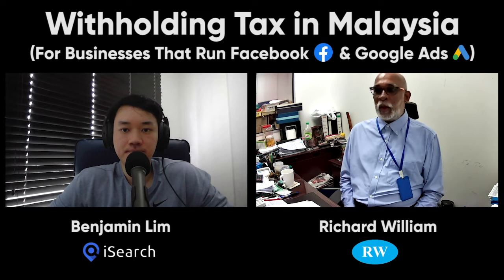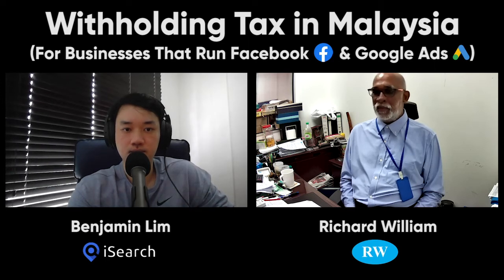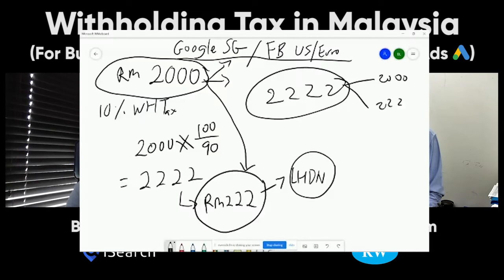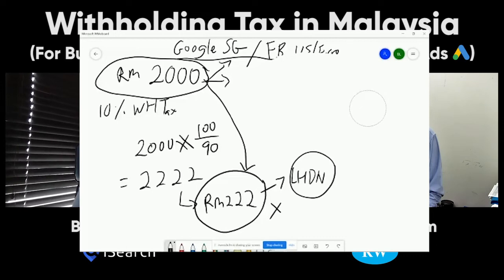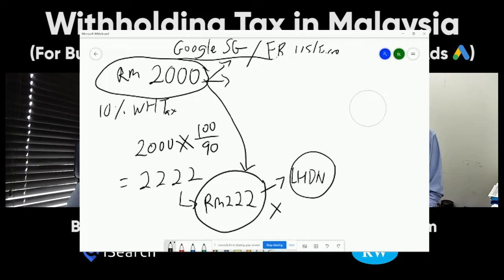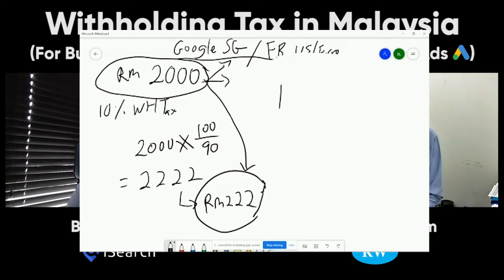The next question is whether Facebook and Google ads are tax-deductible. The 2,000 you spend on Facebook is a tax-deductible expense — you can deduct it from your income. But the 222 withholding tax is NOT tax-allowable. This is peculiar and could seem unfair, but that is the rule. The Inland Revenue's position is that you bear this 222, which is not directly your cost — Google didn't bear it, Facebook didn't bear it. So this expense is not for the production of income, and is therefore not tax-allowable.